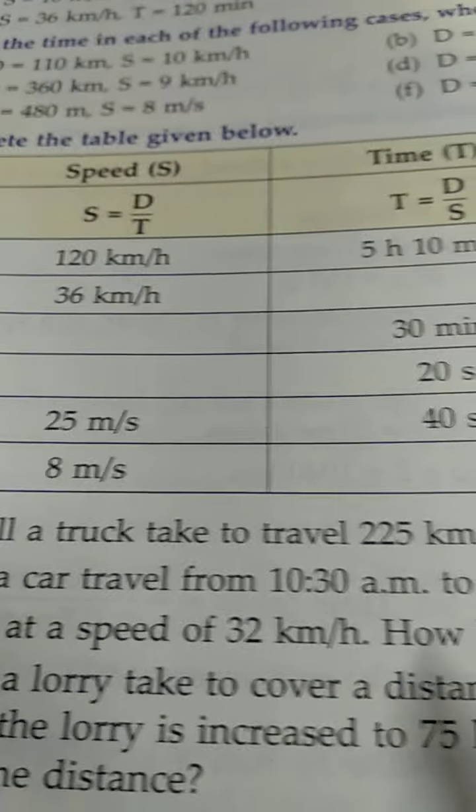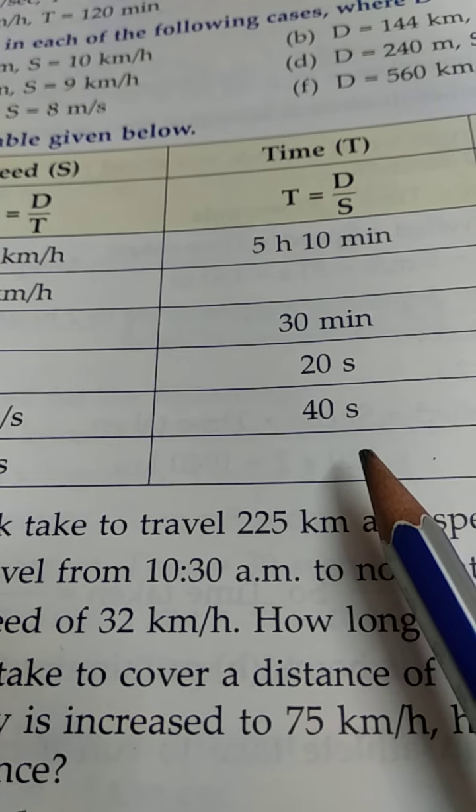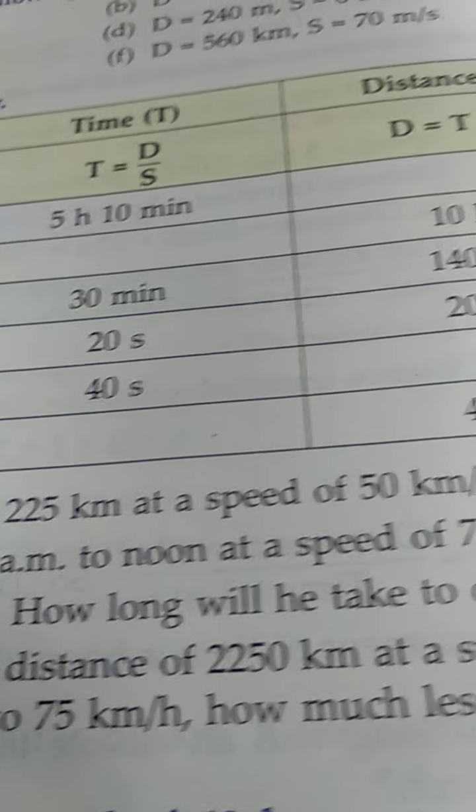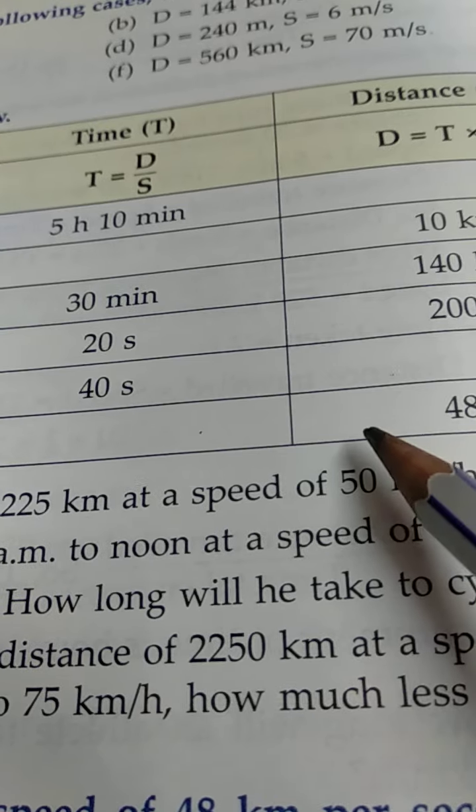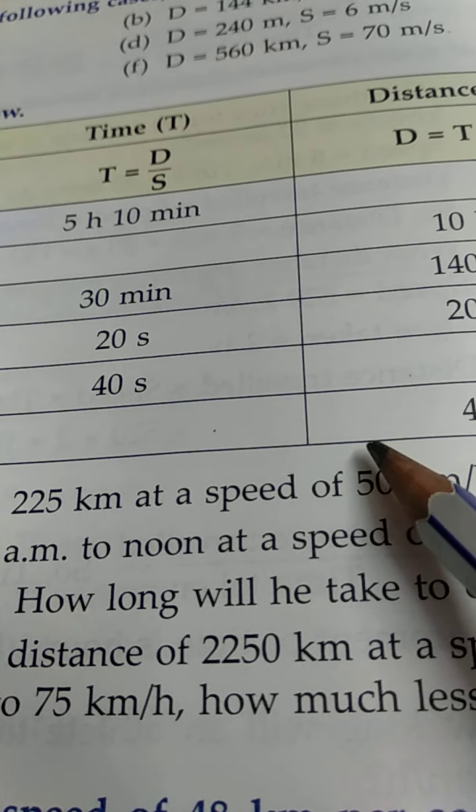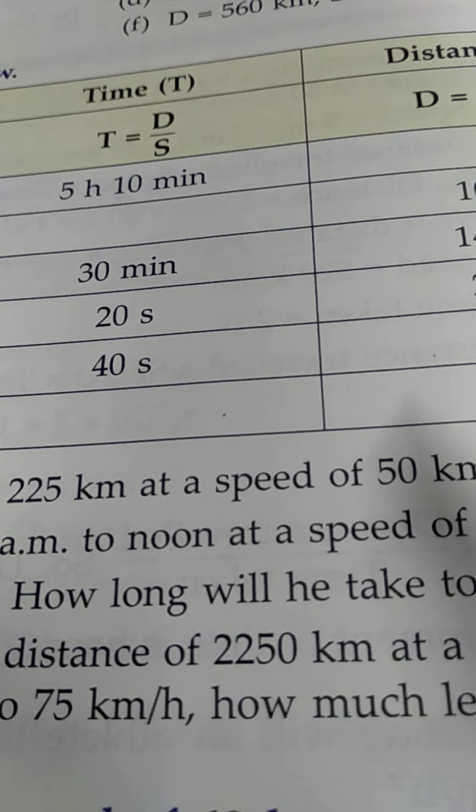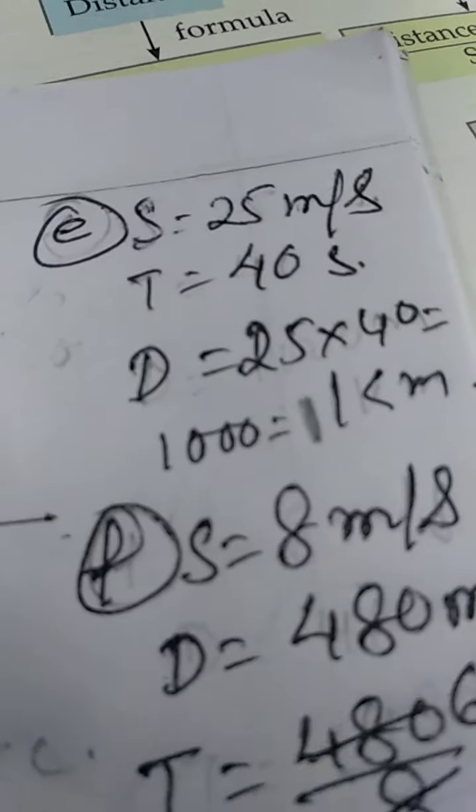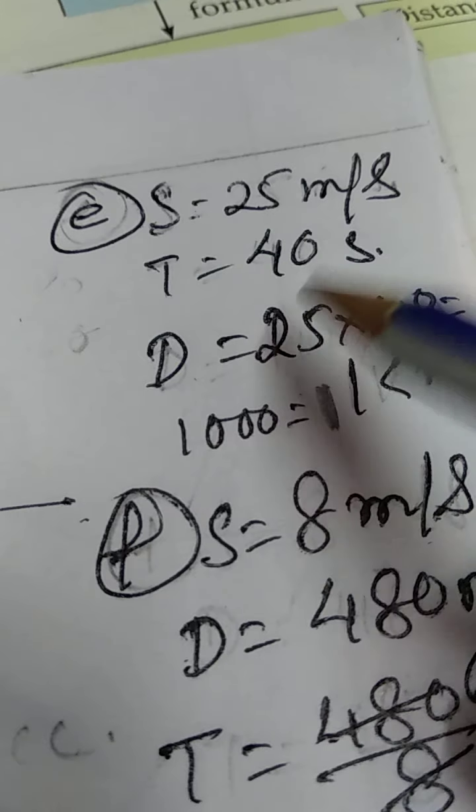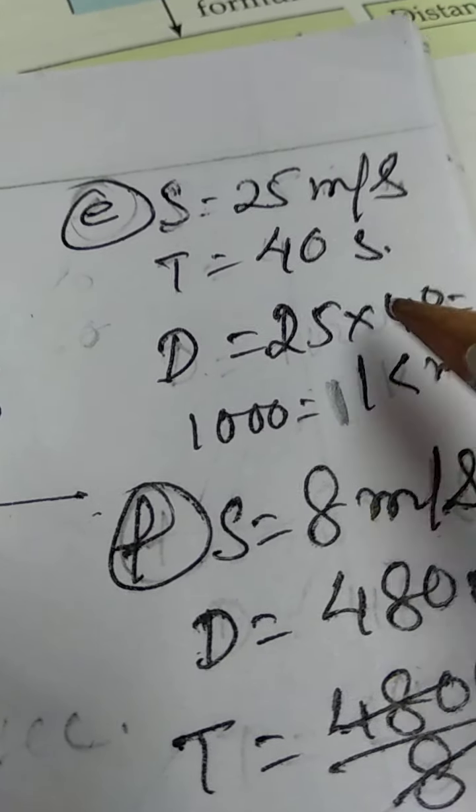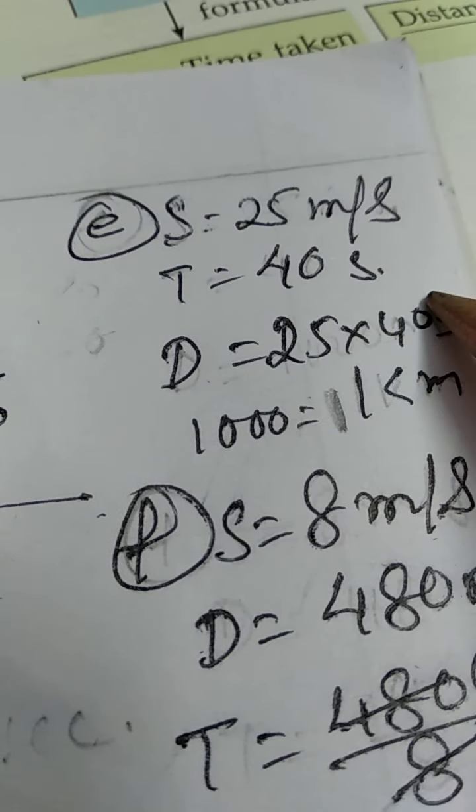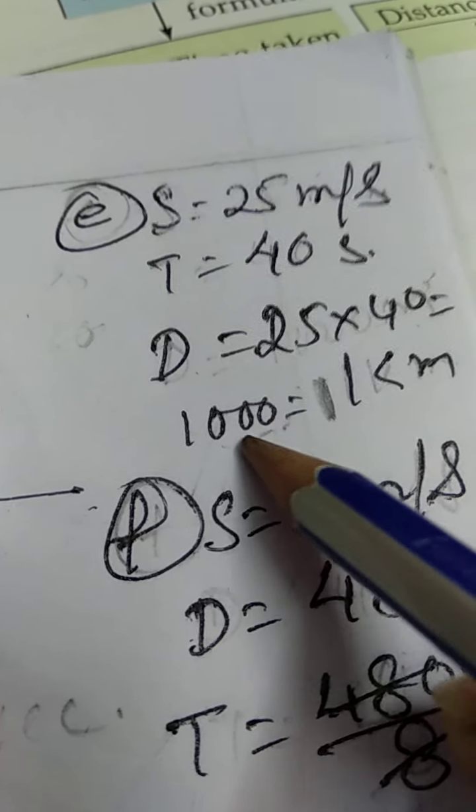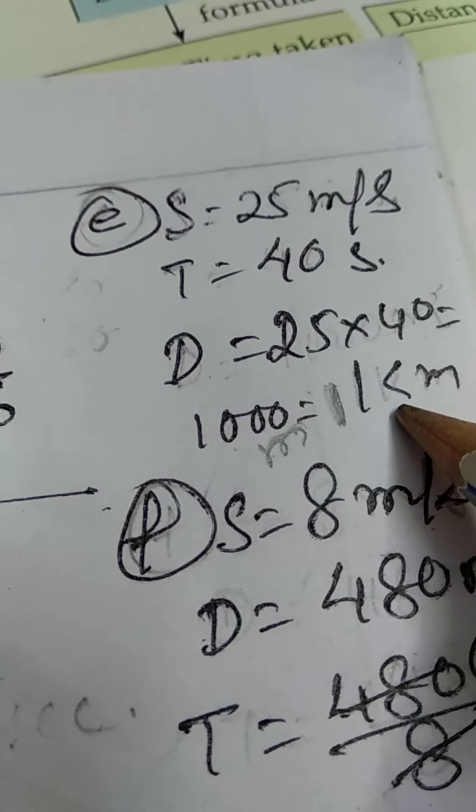E. 25 meters per second, and the time is 40 seconds. The distance track. So what will be the answer? 40 into 25, it will be 1000. So it will be 1 km. If I multiply it, I get 1000. Because 25 into 4 is 100. So 1000 equals 1000 meters equals 1 km.